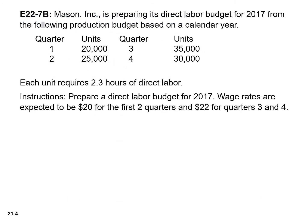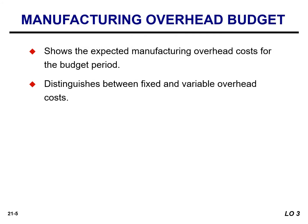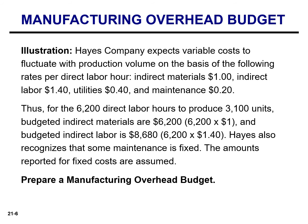The solutions to this exercise will be provided in a separate video. The manufacturing overhead budget shows the expected manufacturing overhead cost for the budget period. This budget distinguishes between variable and fixed overhead cost. Hayes Company expects variable costs to fluctuate with production volume on the basis of the following rates per direct labor hour.